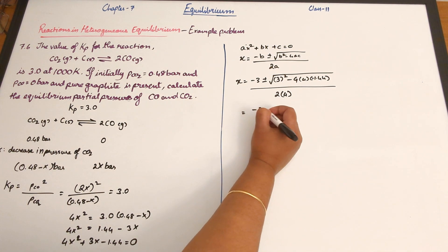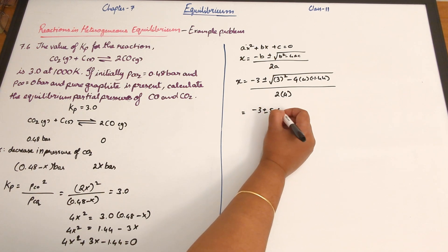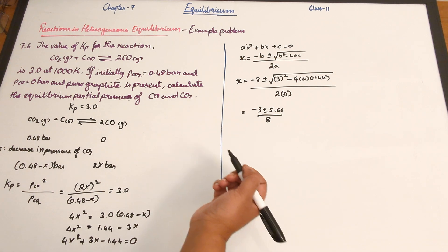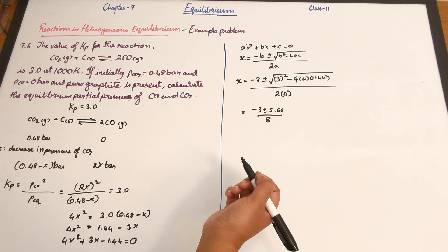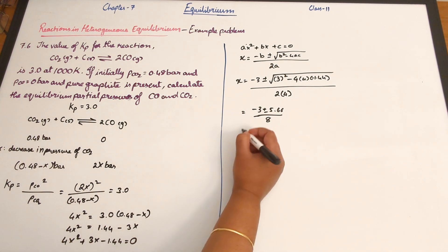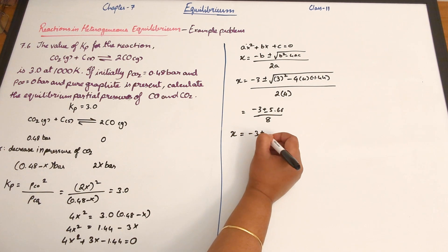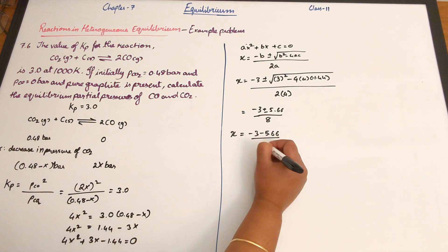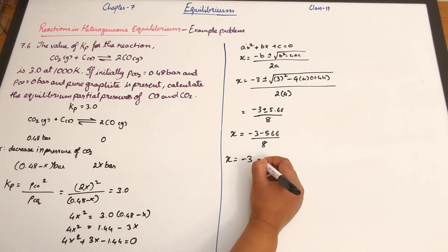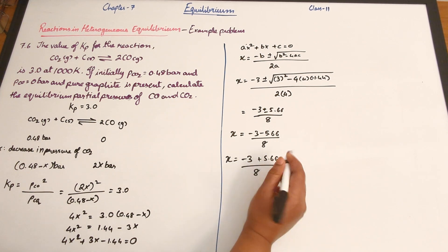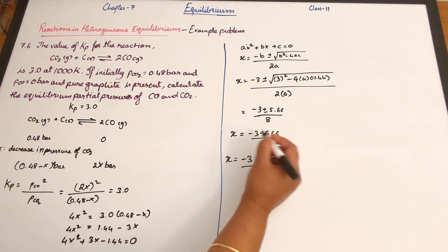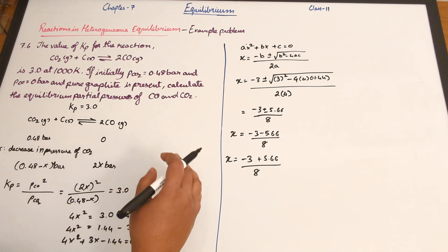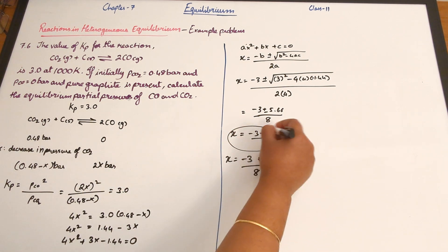Substituting the values, this simplifies to (minus 3 plus or minus 5.66) divided by 8. Taking the minus case gives a negative numerator, which would result in a negative partial pressure, so that root is ignored.